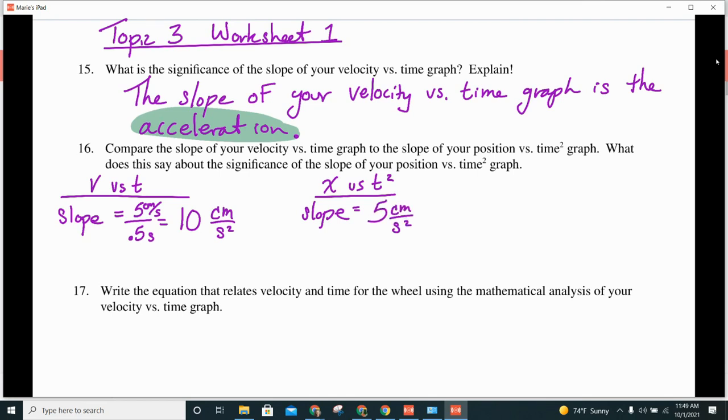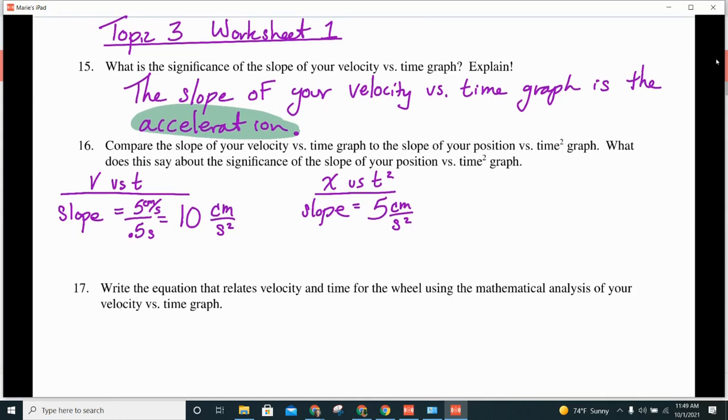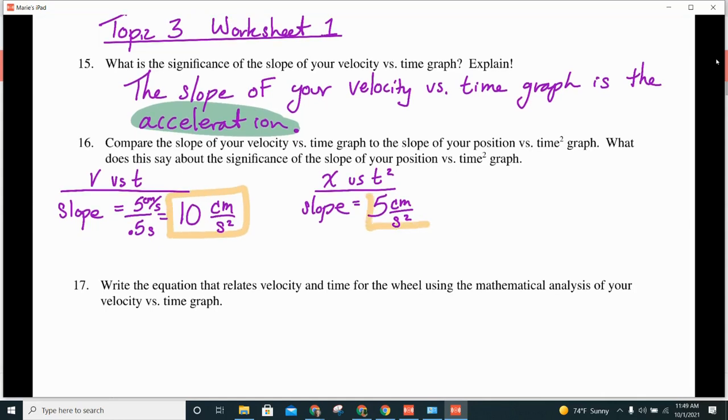Then this question asked us to compare the two. So, if I'm comparing 10 centimeters per second squared to 5 centimeters per second squared, how do they compare? How do those compare to one another? One's bigger. And the other one's smaller, right?